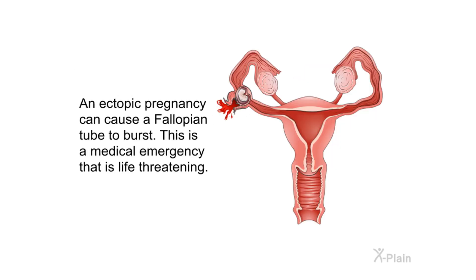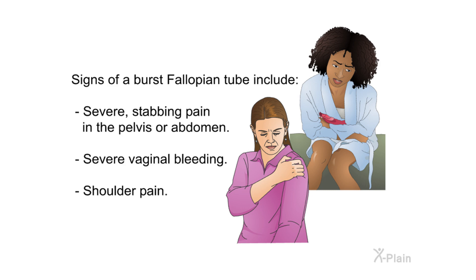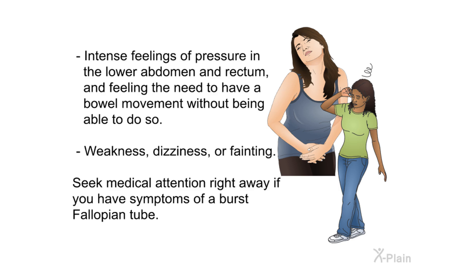An ectopic pregnancy can cause a fallopian tube to burst, which is a life-threatening medical emergency. Signs of a burst fallopian tube include severe stabbing pain in the pelvis or abdomen, severe vaginal bleeding, shoulder pain, intense feelings of pressure in the lower abdomen and rectum, feeling the need to have a bowel movement without being able to do so, and weakness, dizziness, or fainting. Seek medical attention right away if you have these symptoms.